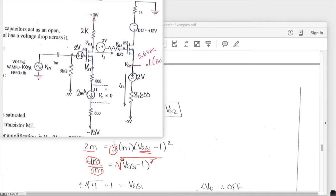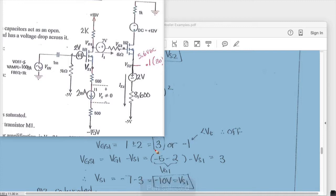So the square root cancels out with the squared and so I get a VGS1 is equal to plus or minus 4, square root of 4 plus 1. So we see that that gives us a 3 or a minus 1.